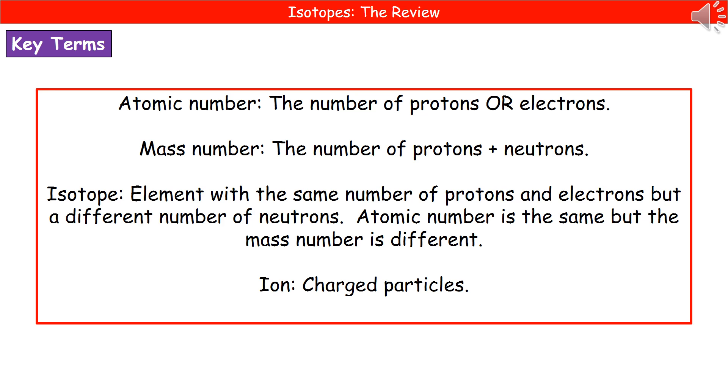So we have a few key terms we need to know. First one, one we've already mentioned so far in this video, is the atomic number. Now, the atomic number just tells you how many protons there are or how many electrons. Because as we know, the number of protons is the same as the number of electrons. So if ever you're asked to write down the number of electrons or protons, just write down the atomic number.